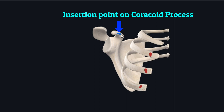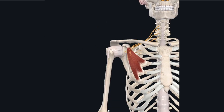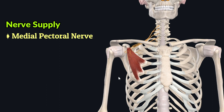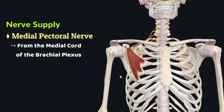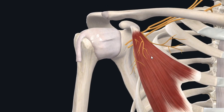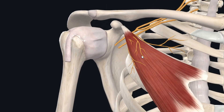Looking at the nerve supply of the pectoralis minor muscle, this muscle is supplied by the medial pectoral nerve, which originates from the medial cord of the brachial plexus. The branches supplying the pectoralis minor muscle are the pectoral branches of the medial pectoral nerve.